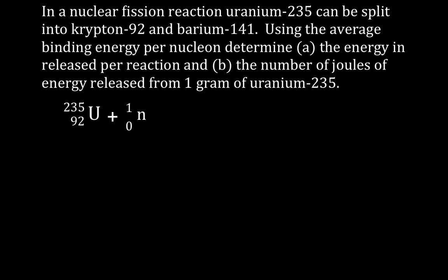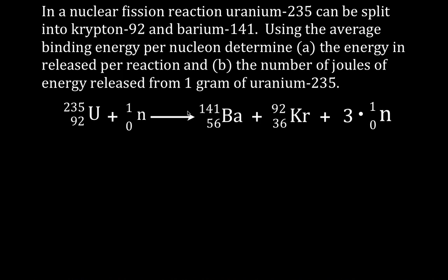Here is the reaction: our fissile material uranium-235 absorbs a neutron to form uranium-236, which is unstable. It then splits into barium-141 and krypton-92, and also produces usually three neutrons, which can go on to cause a chain reaction — but we're not focusing on that here.